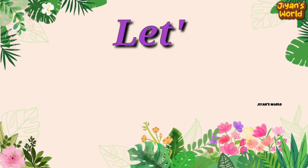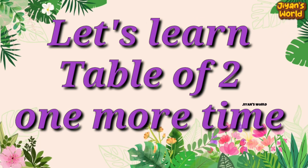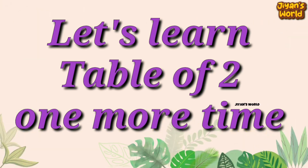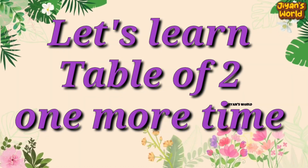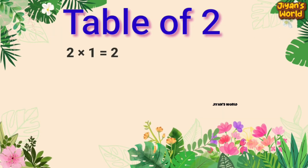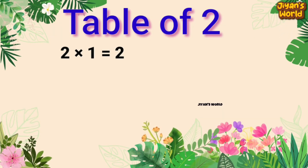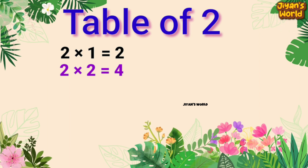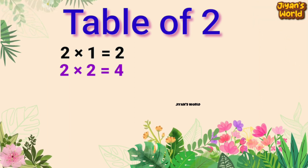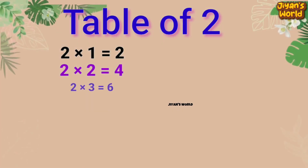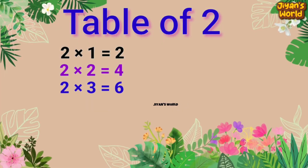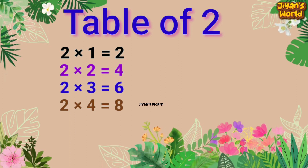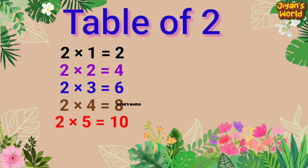Let's learn Table of 2 one more time. 2 1s are 2, 2 2s are 4, 2 3s are 6, 2 4s are 8, 2 5s are 10.